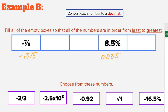We're ordering from least to greatest, and we can notice there's one positive number already in our order with only one other positive number to choose from. All the other numbers are negative, so the only number that can be greater than 0.085 — since it's the only other positive number — is the square root of 1. We can verify: the square root of 1 is 1, and 1 is bigger than 0.085, but we can save time by recognizing it's the only positive option.